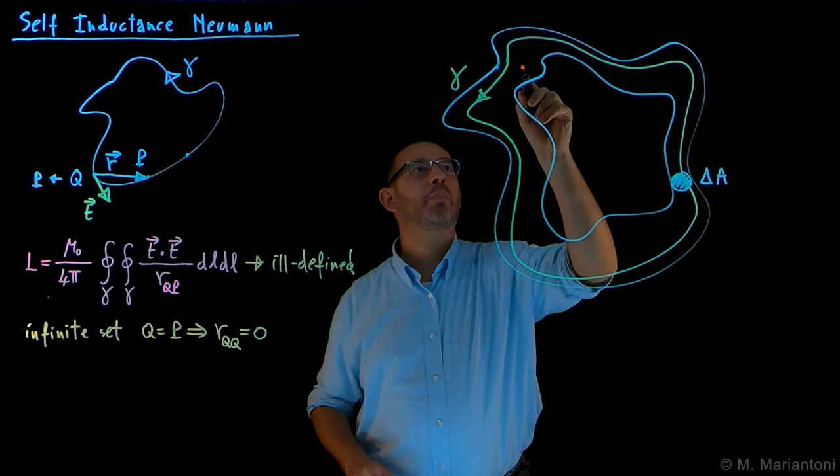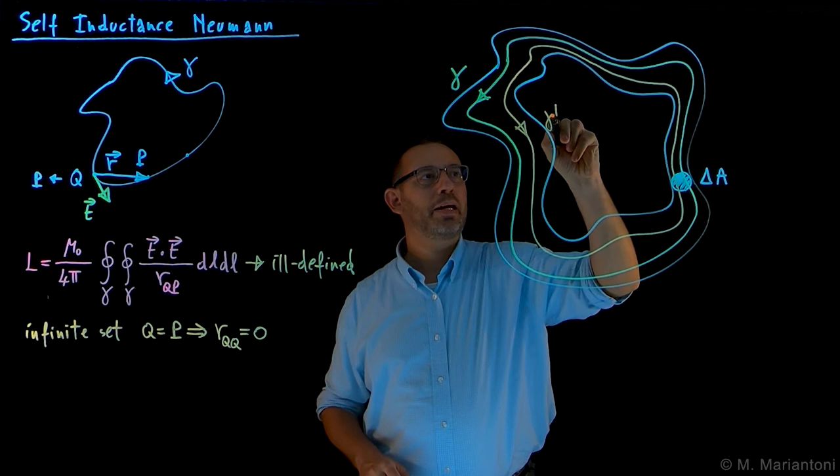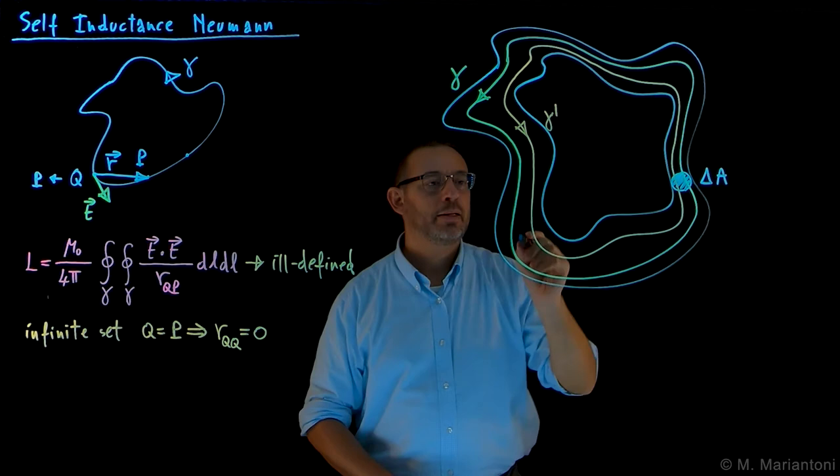I choose these two. I can choose as many as I want. In such a way, this is gamma prime, that they never touch each other. That is, there is a small distance delta between them.